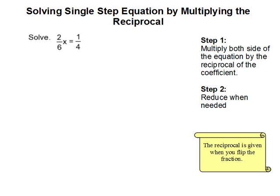Solving single step equation by multiplying the reciprocal. In this problem, we have 2 over 6x equals 1 fourth and we are to solve for x.